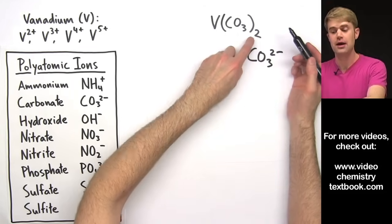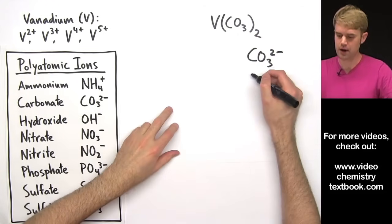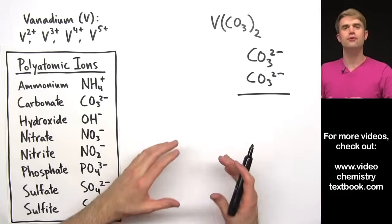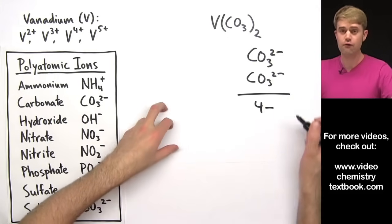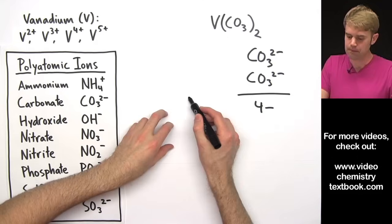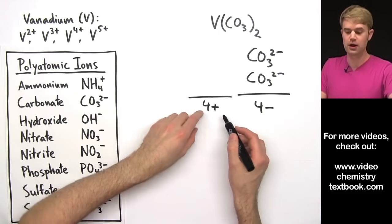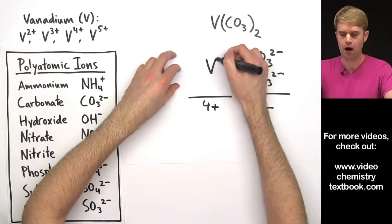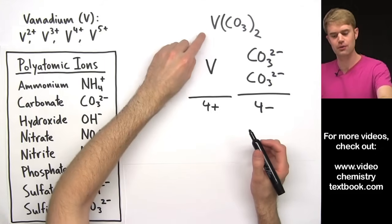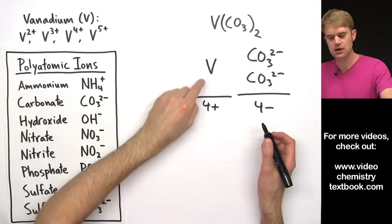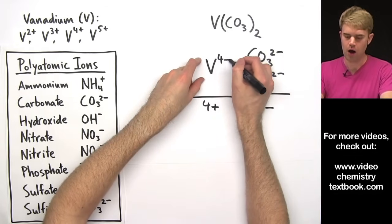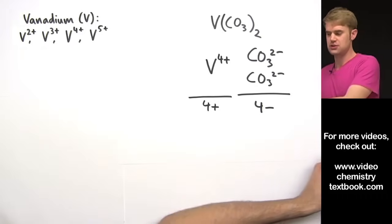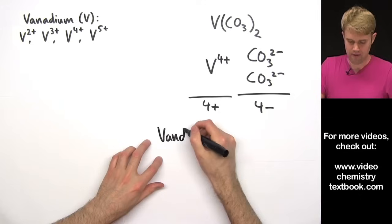These parentheses and the 2 outside tell us that we have 2 of these carbonates. So let me write another one in here, CO3 2-. And that means that for total negative charge here, we have 4-. Now, that 4- has to be balanced out by 4+ of positive charge. And that positive charge is going to end up on this vanadium. There is only one of them. There's no number after it, so there's just one. So that means that this vanadium has to hold all of the positive charge. So it's vanadium 4+.